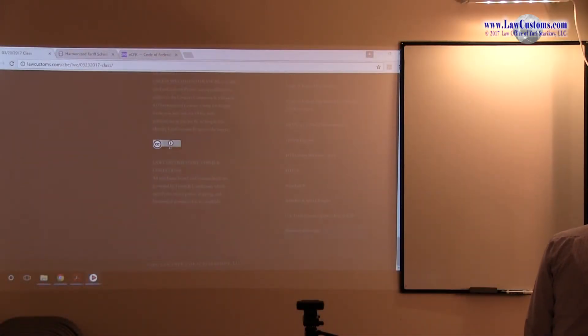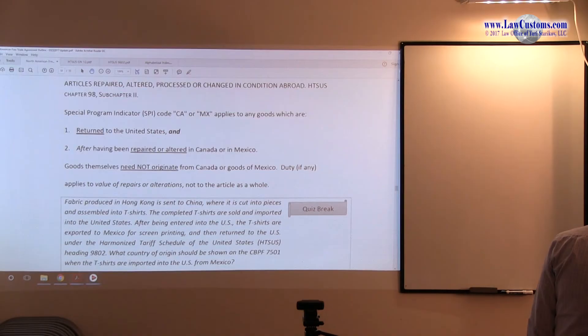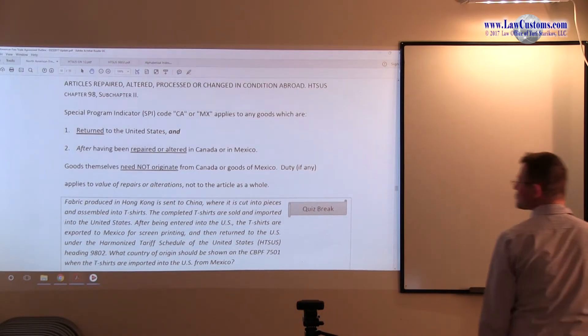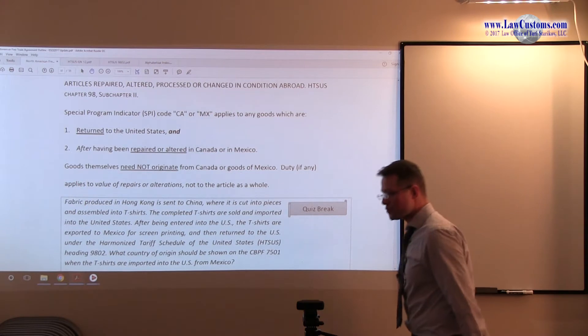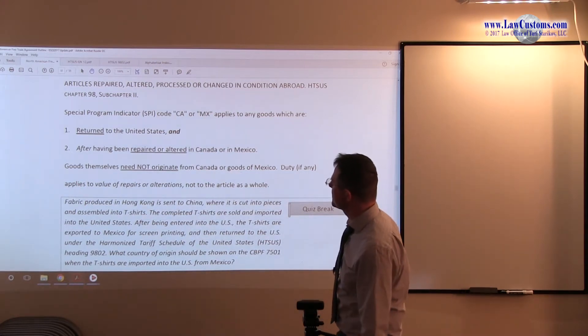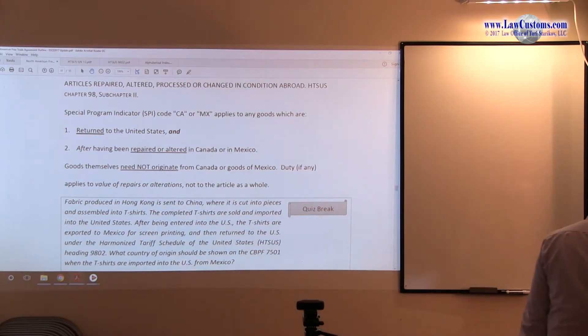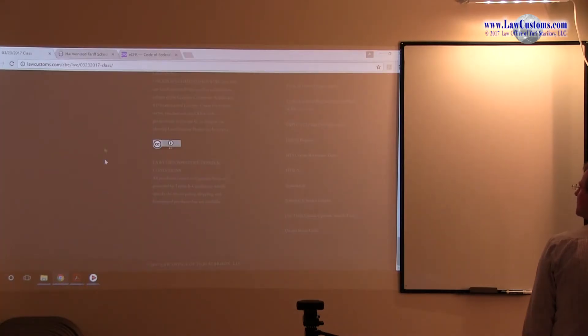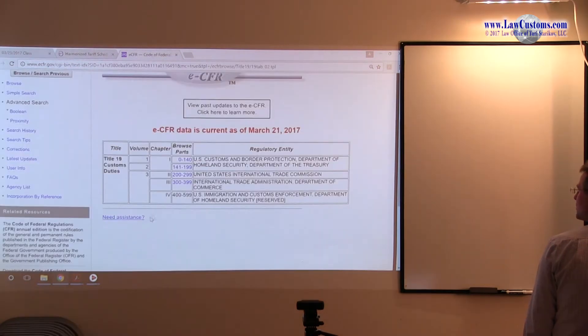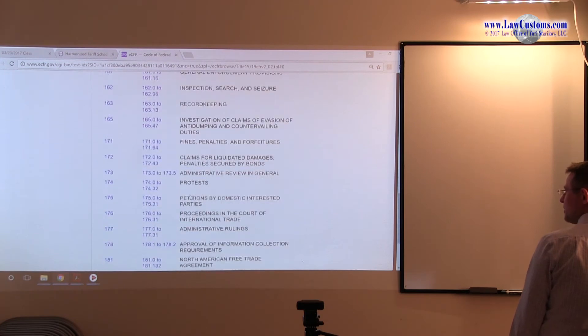So we're still on NAFTA, North American Free Trade Agreement. And last time we stopped at Chapter 98, Subchapter 2 provisions, and they also relate to NAFTA. But they're somewhat different from the rest of the NAFTA provisions that we talked about so far. If we take a look at the Code of Federal Regulations, recall that NAFTA provisions under Part 181.